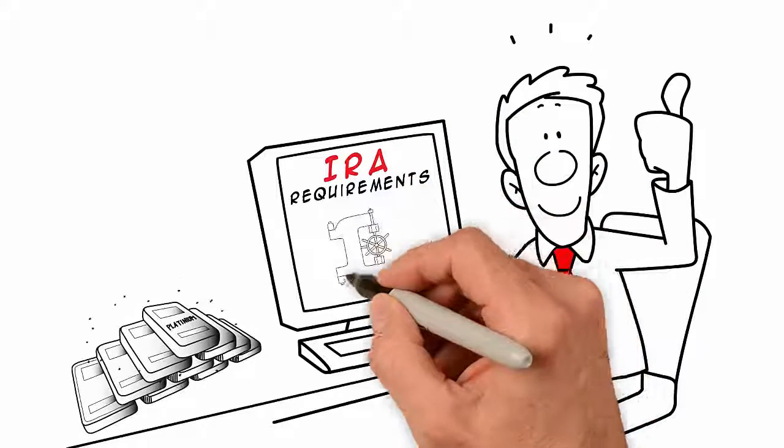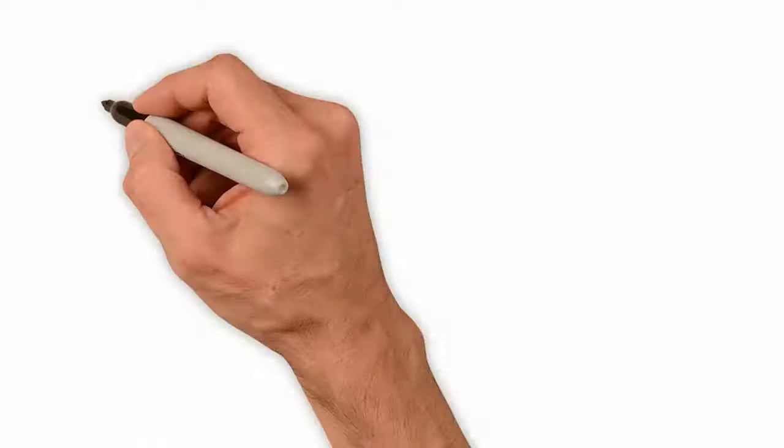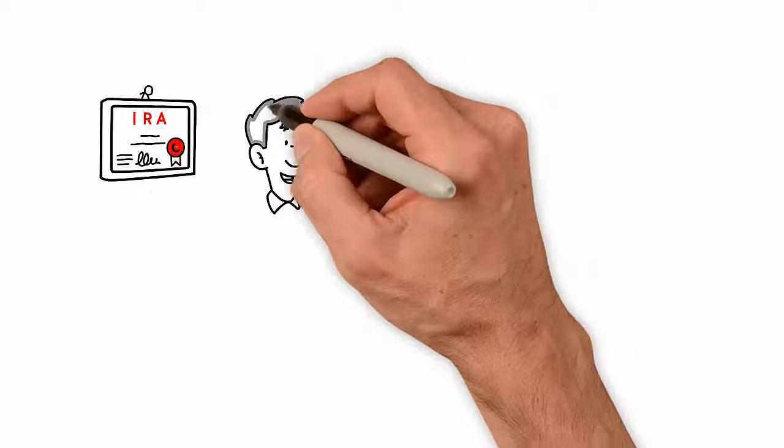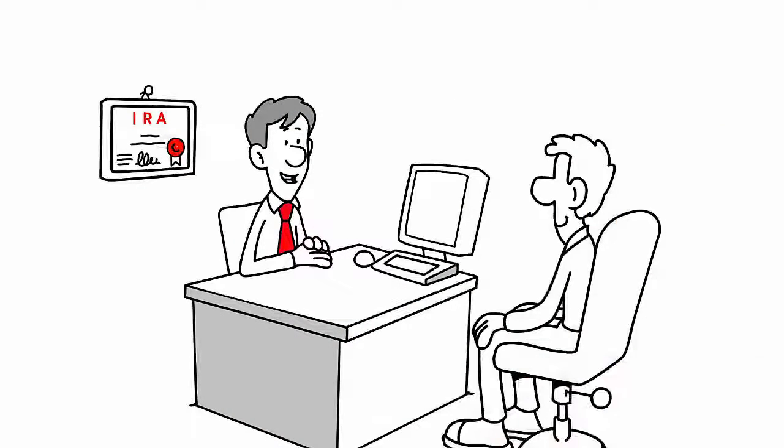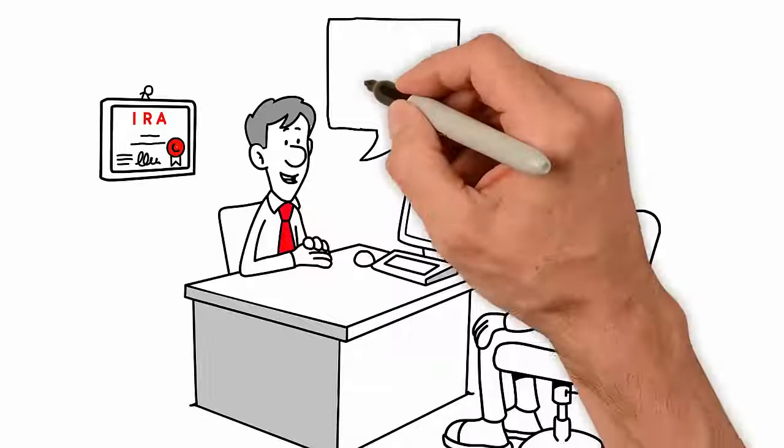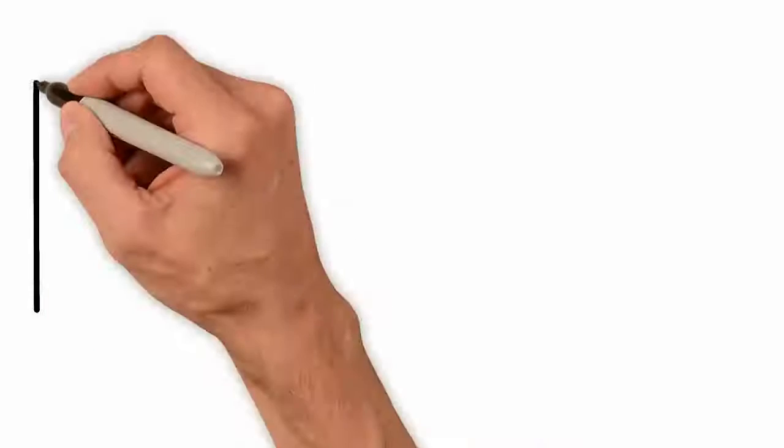IRS requirements state that the approved precious metals must be stored in a specific manner. Distributions from a precious metals IRA are the same as those for a regular IRA. The account holder may liquidate their IRA metals for cash or take physical possession of them. Both actions are akin to taking an IRA distribution.